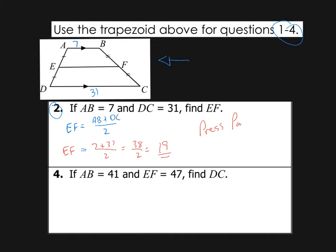Press pause. Do number one. Okay, and now we move on to number four, and we're still using the same drawing. So we take a look. AB is equal to 41. So this is 41, and EF is worth 47, and they want us to find DC. So that's what we're looking for.